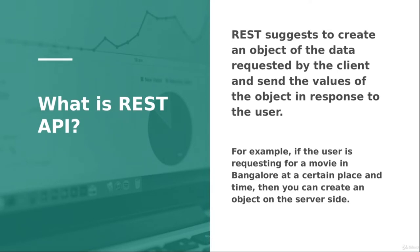The REST API stands for Representational State Transfer. It creates an object of the data requested by the client and sends the values in response. For example, booking a movie: you send data to the server, it makes an entry in the database, and sends back a confirmation. Later when you go to the movie hall, the server confirms your booking exists.